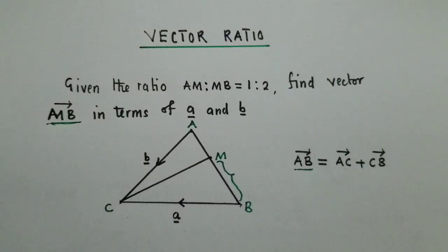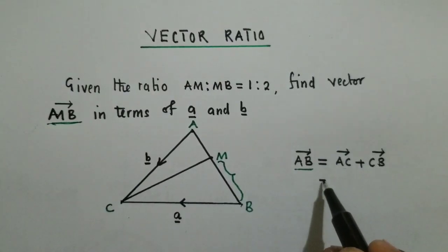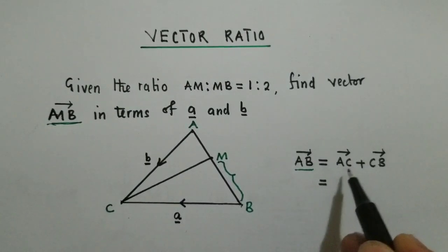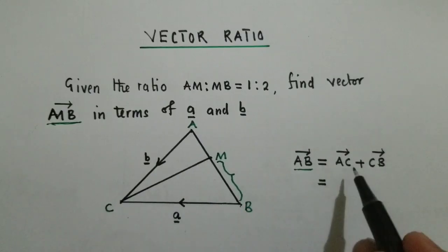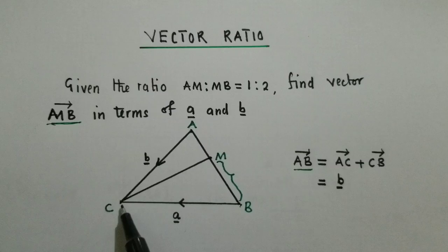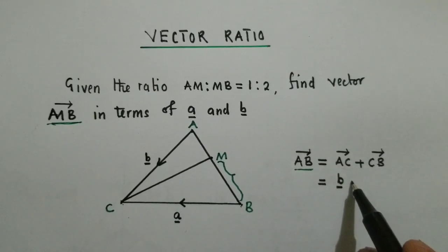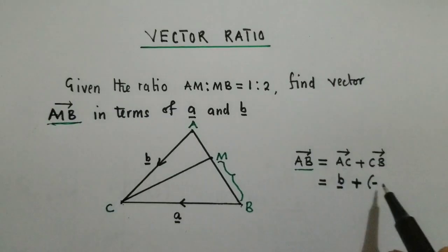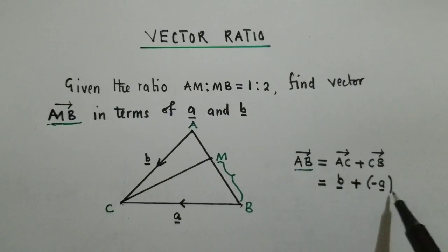So once we do that, we can now plug in the values. What is AC? AC is vector b. What about CB? CB would simply be negative a, or vector negative a.